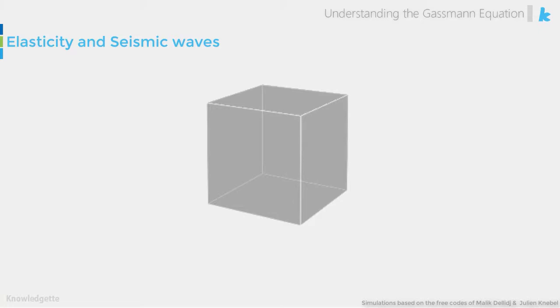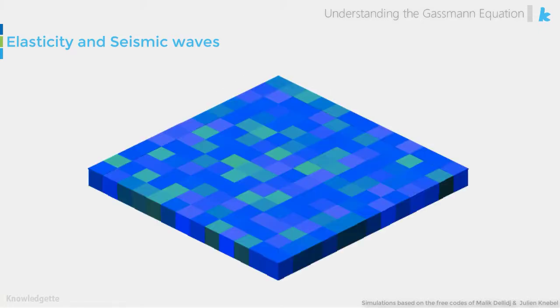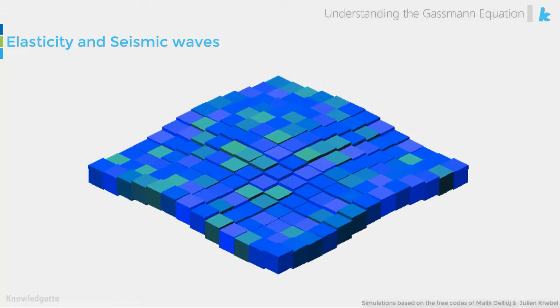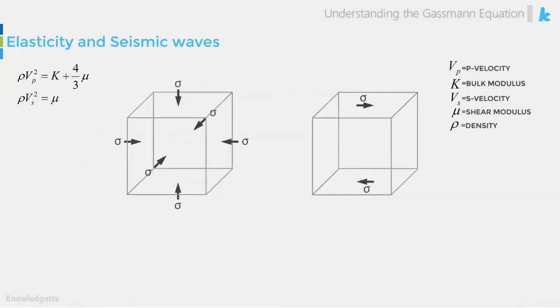Imagine a small cube of rock within the earth. A passing seismic wave exerts a small stress on that cube of rock. The stress is indicated by sigma.